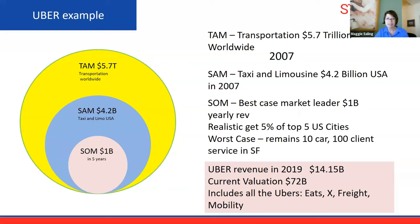Their worst case was that they were just a private car service in San Francisco, where they were starting. Their first two cities they intended to go after were New York and San Francisco. Well, we all know what happened with them — Uber's revenue in 2019 was $14.15 billion. They expanded beyond ride-hailing to Uber Eats, Uber Freight, Uber X, and Uber Mobility. So they really undershot what they could do, but it's a great story.